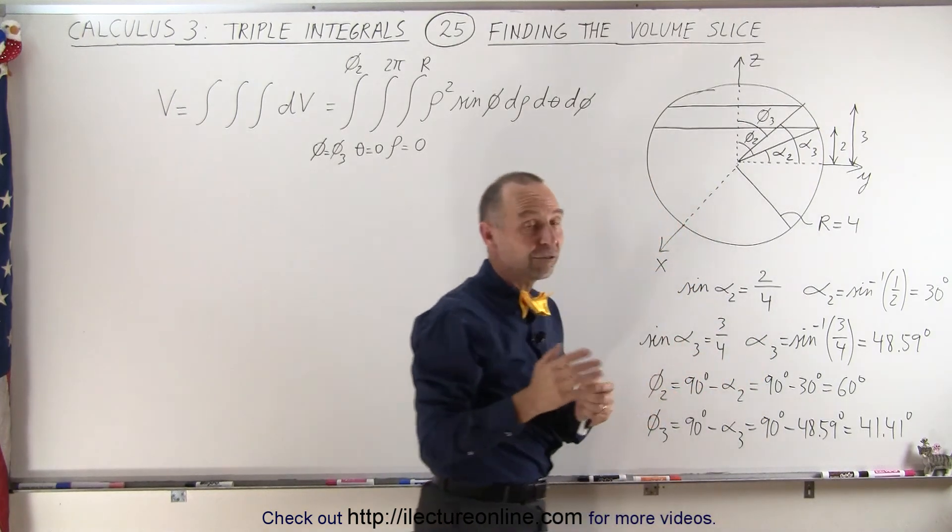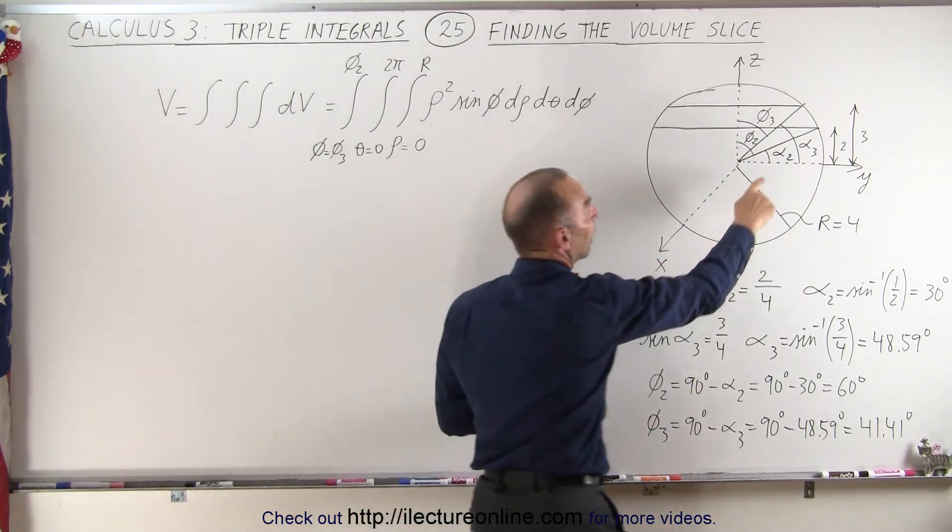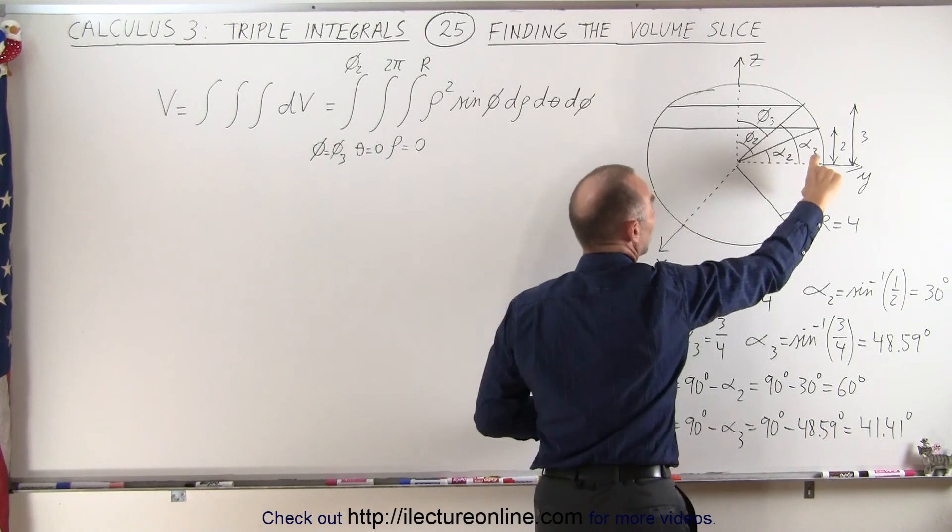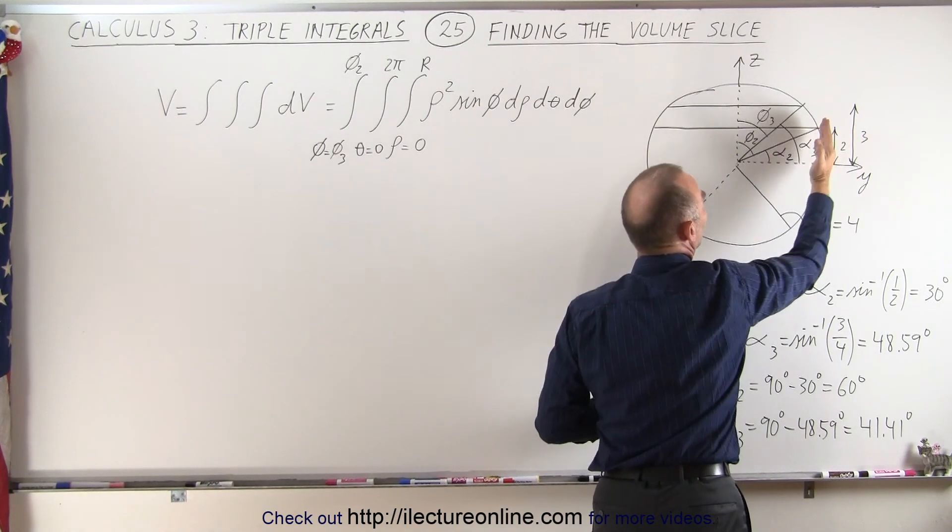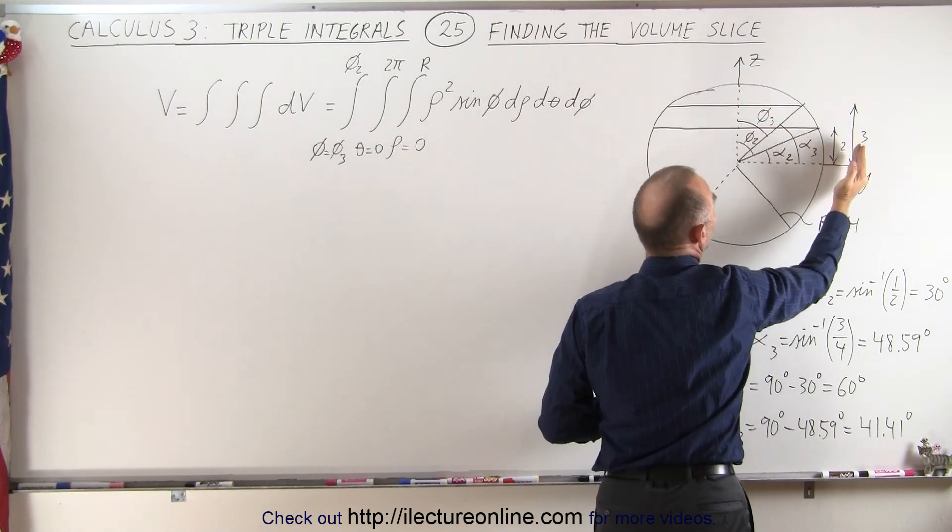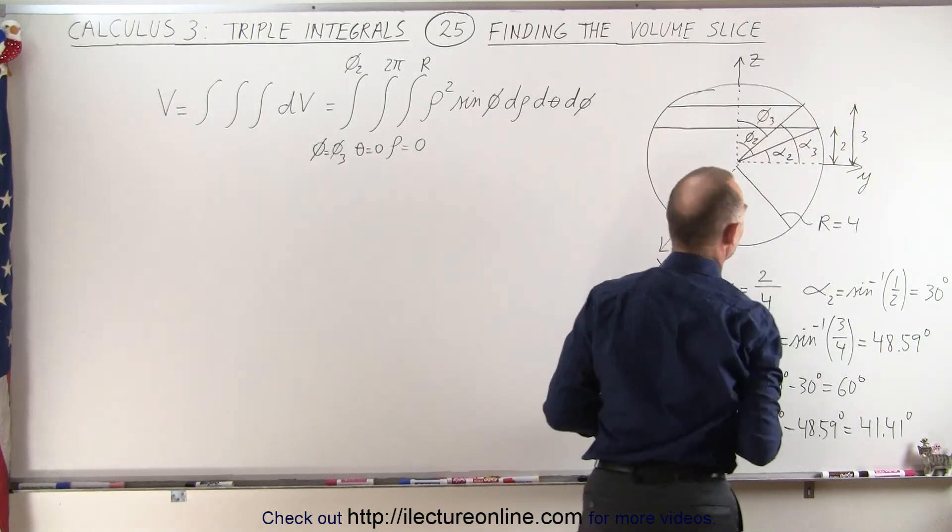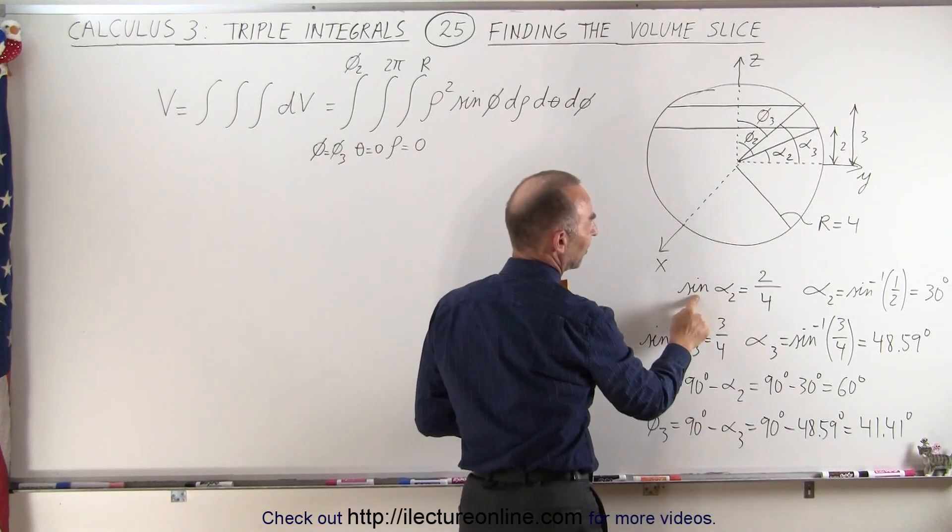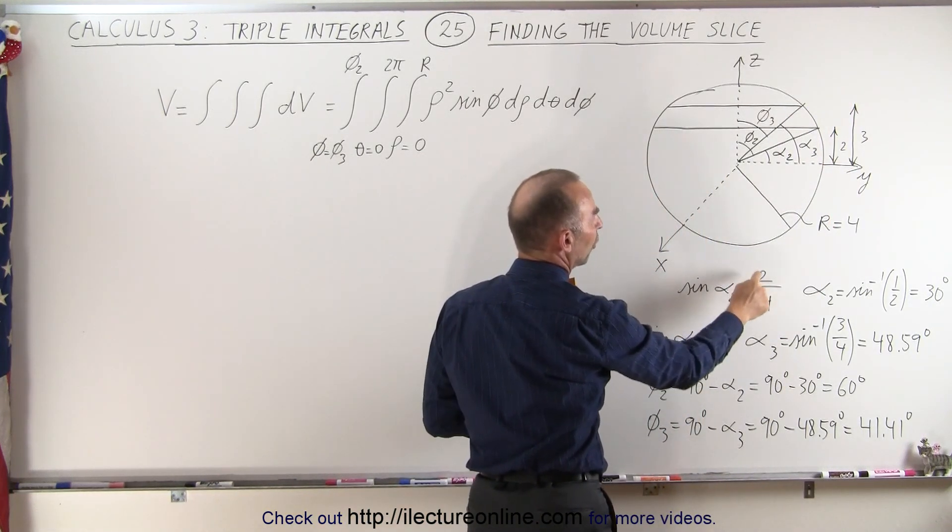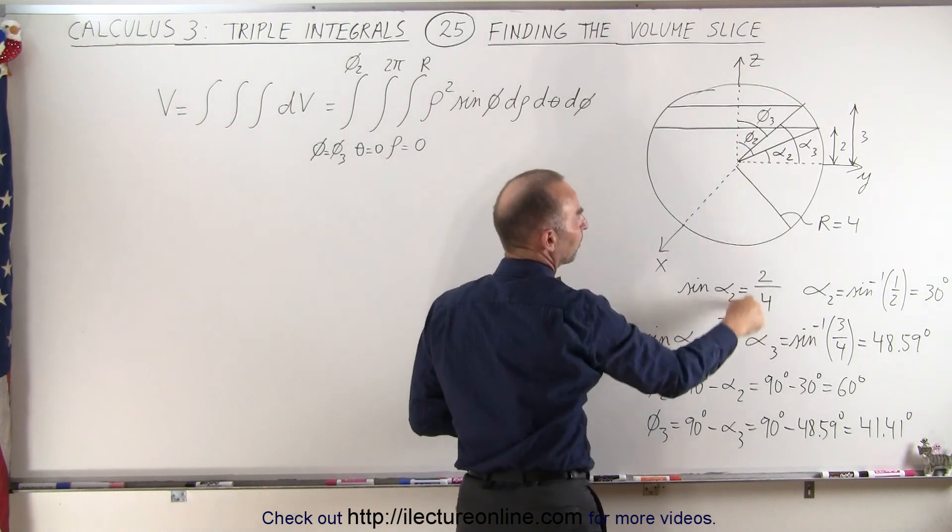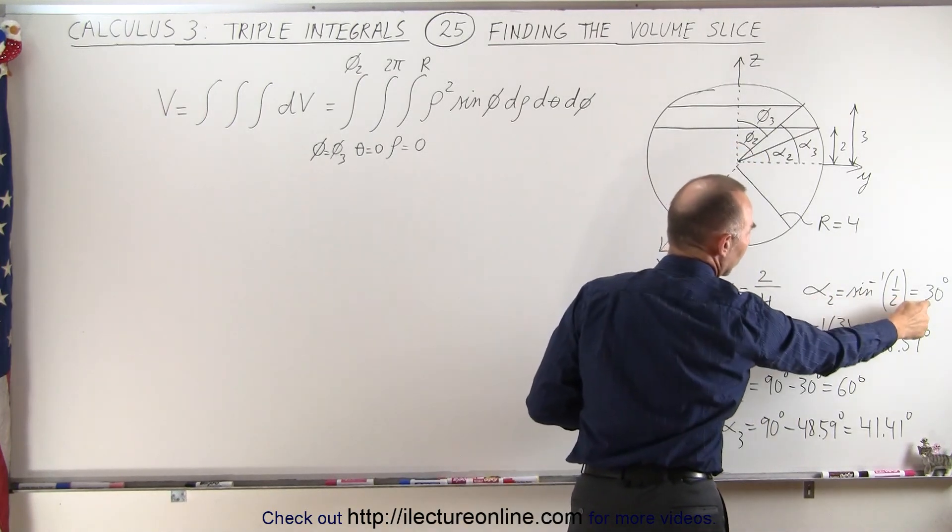Before we can find phi 2 and phi 3, let's find alpha 2 and alpha 3. Notice that this height is 2, the opposite side to the angle. This height is 3, the opposite side to the angle. So we can say that the sine of alpha 2 is equal to 2 over the hypotenuse which is 4, and so the angle is equal to 30 degrees.